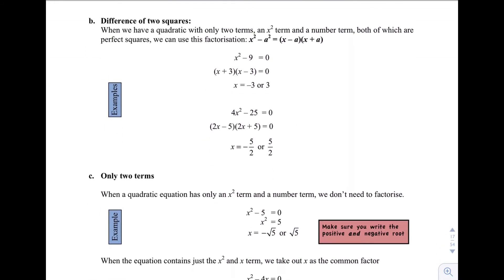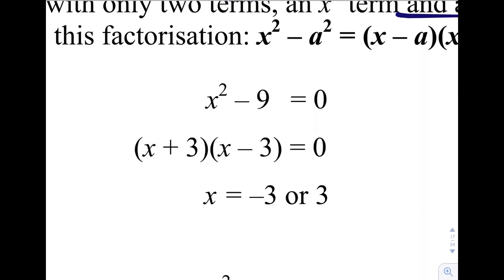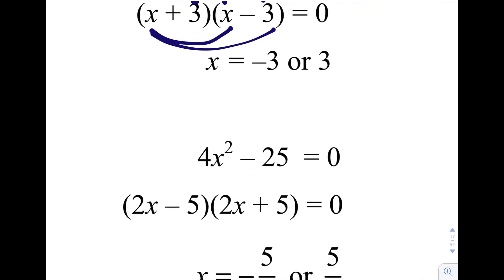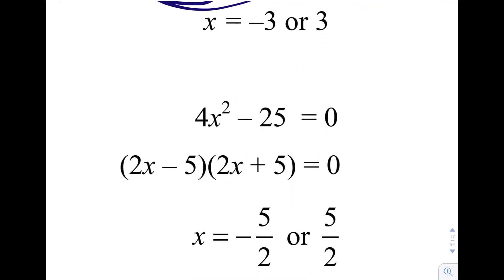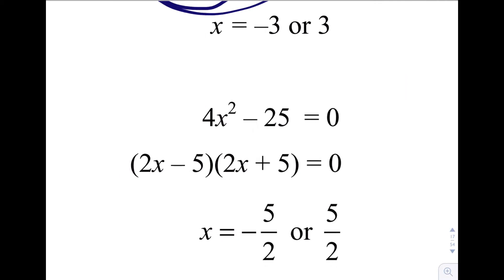You also have a difference of two squares. So this is a special case where you can factorize it, x plus 3, x minus 3. And this works because we've got x squared there, minus 3x plus 3x, the middle terms disappear. 3 times negative 3 gives us negative 9. So this works when we've got the difference of two perfect squares. So 4x squared minus 25, 2x minus 5, 2x plus 5. So the brackets are the same. One's plus and one is minus.